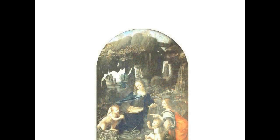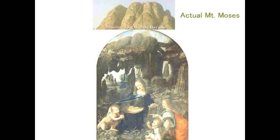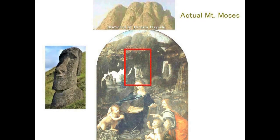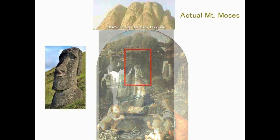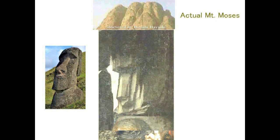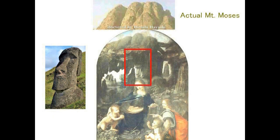Have a look again at the Virgin of the Rocks that Leonardo da Vinci is said to have painted. In the picture, you can see Mount Moses drawn on the top edge. Mount Moses is the highest mountain of holy mountains for Muslims. And in the center, a rock which resembles the Moai of Easter Island is drawn. The rock and hand look like a Buddha statue.